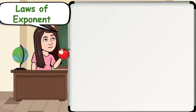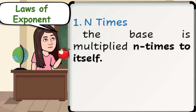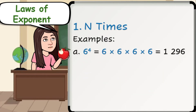Let's have first the n-times rule, which tells that the base is multiplied n times to itself. Mathematically speaking, it is a raised to n, which is a times a times a times a times a, and so on and so forth. For example, letter A: 6 raised to 4 means you have to multiply 6 by itself 4 times. That is, 6 times 6 times 6 times 6, which is equal to 1296.